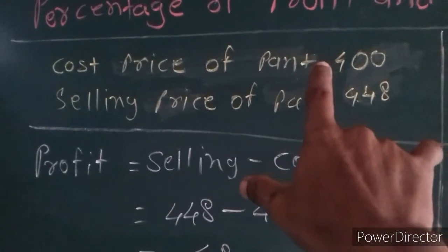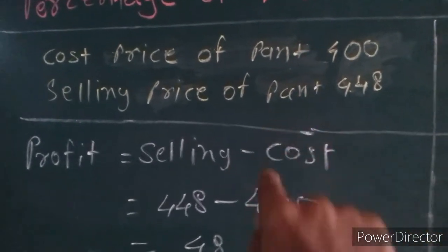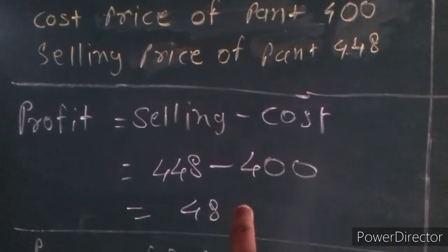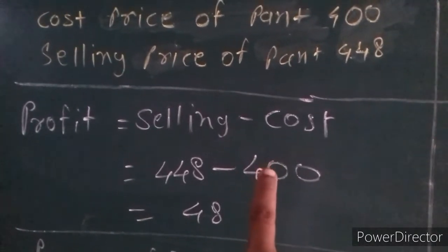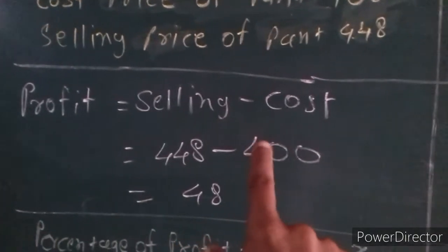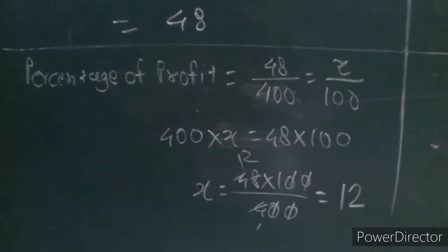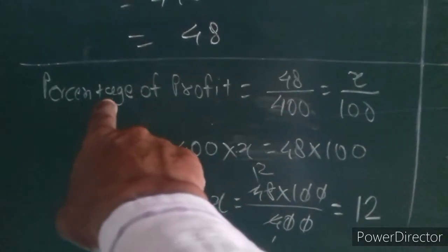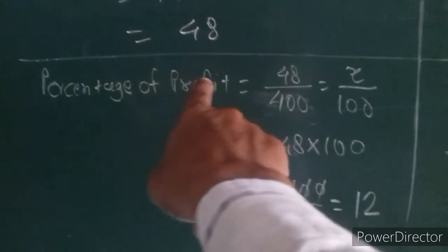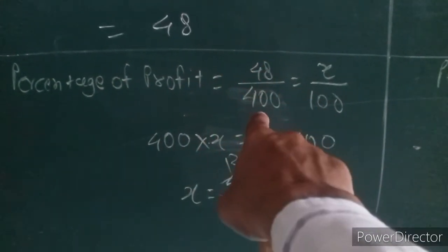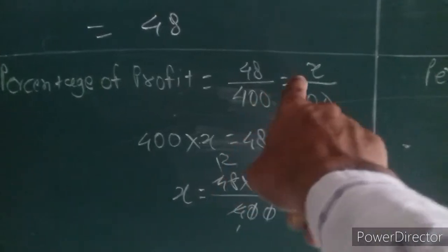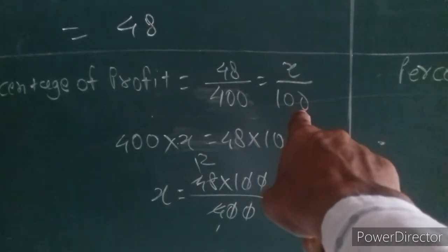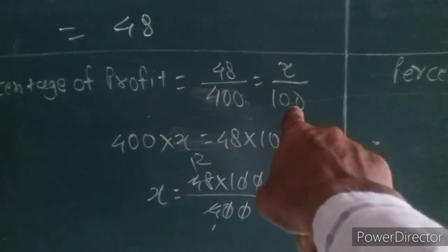Now it is a regular profit. Now let's learn about percentage of profit. Percentage of profit is set up as: 48 divided by 400 equals X upon 100.